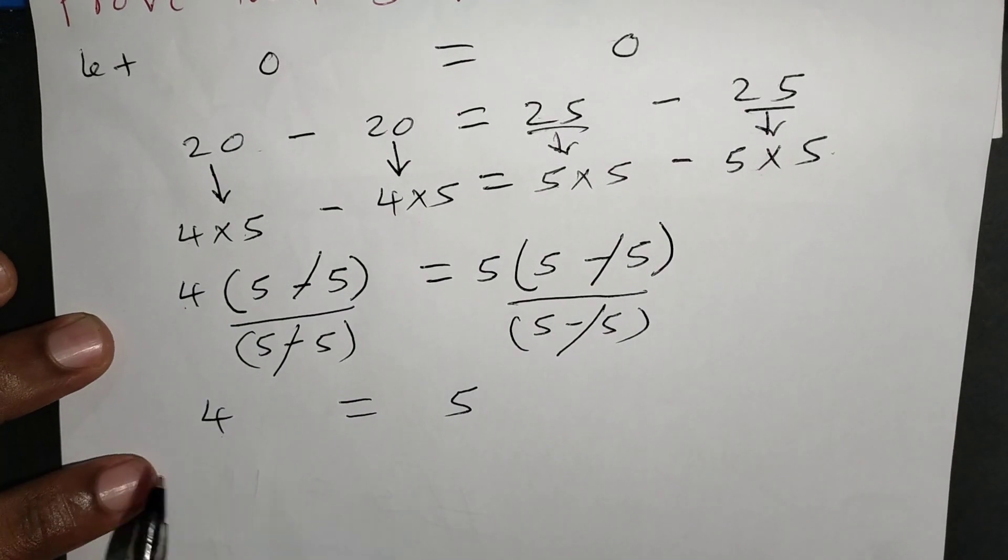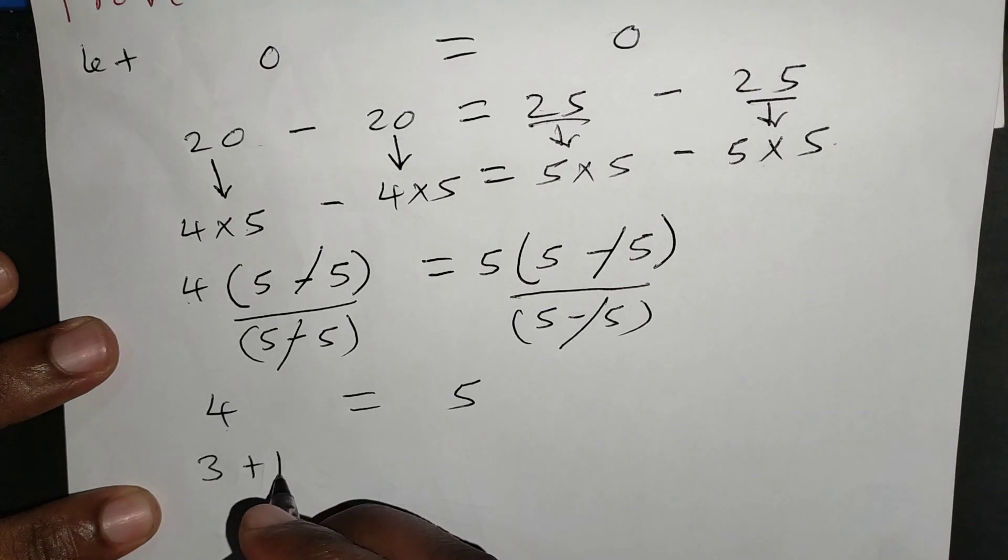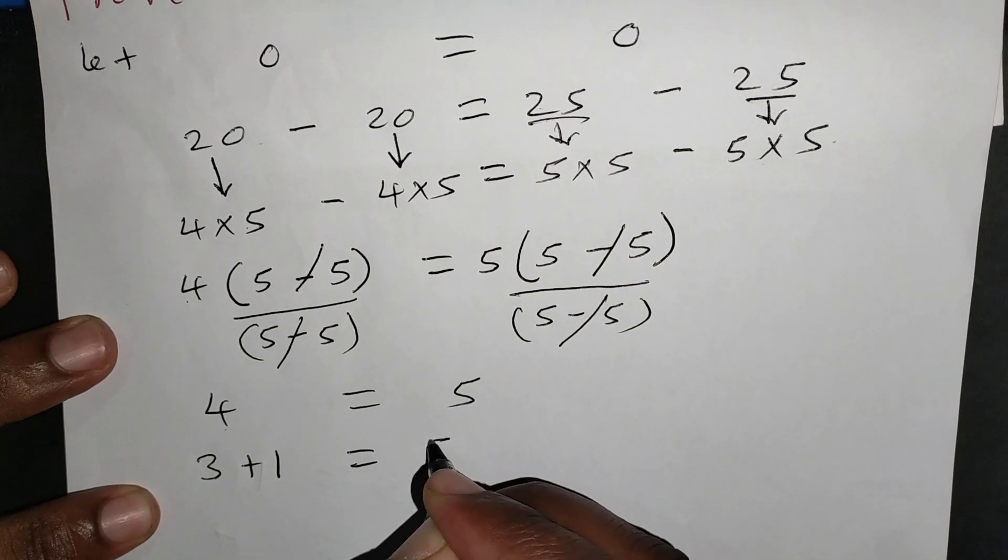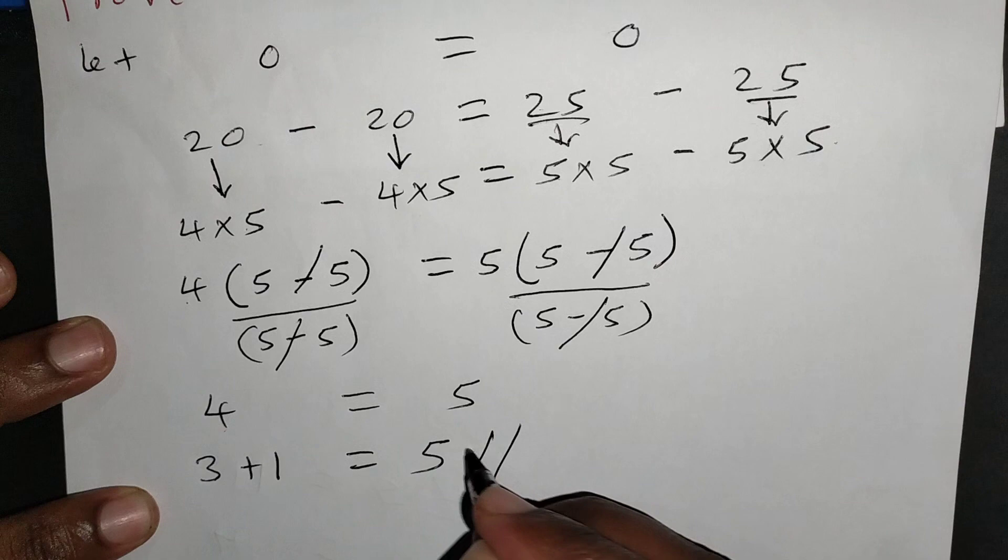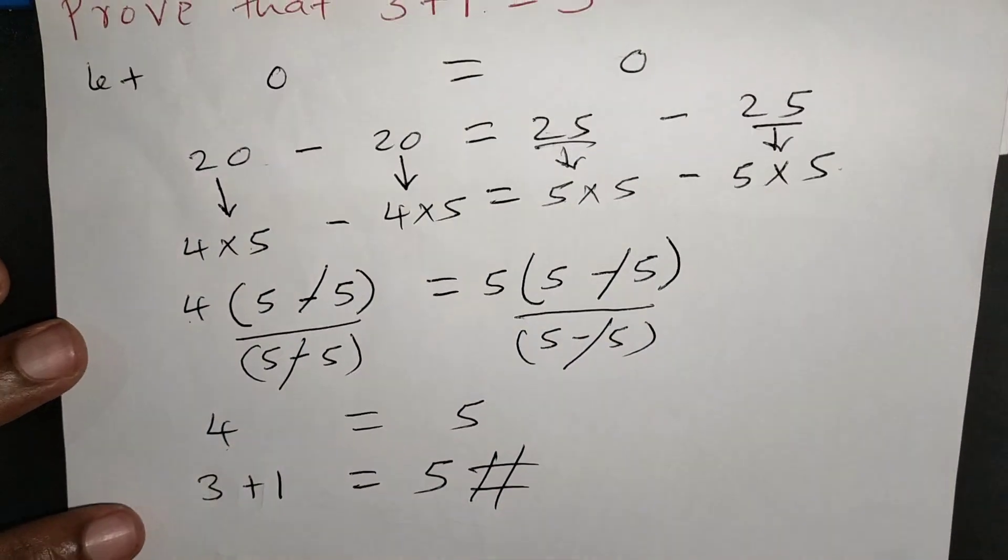Now, we know that 4 is the same as saying 3 plus 1. So this one simply means that 3 plus 1 will actually be equal to 5. So we have actually proved that 3 plus 1 can also be equal to 5.